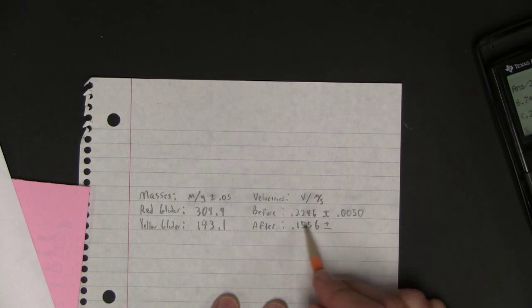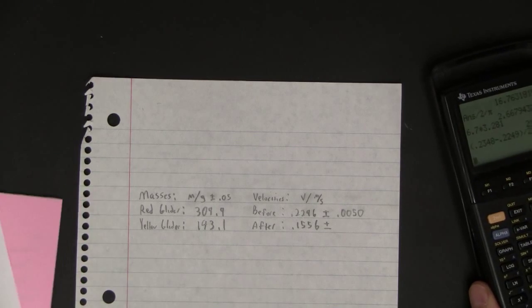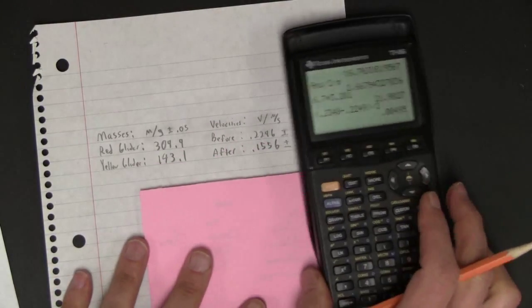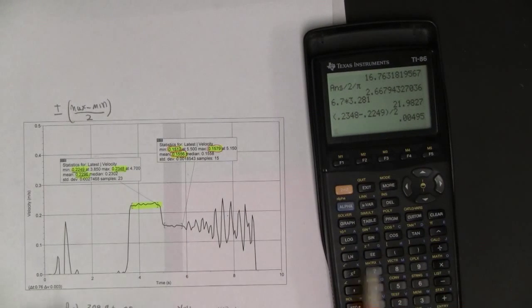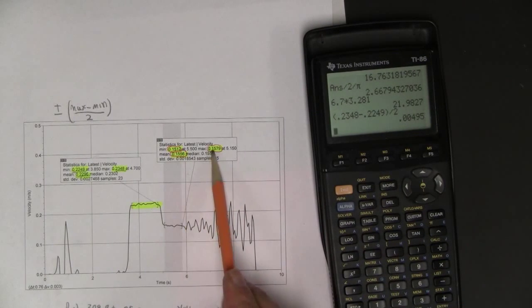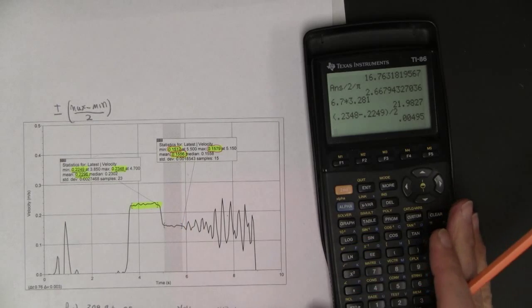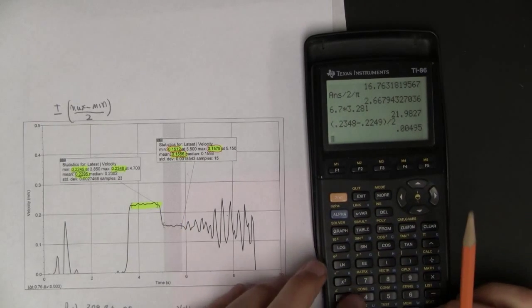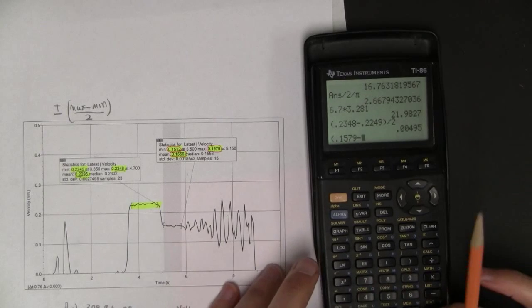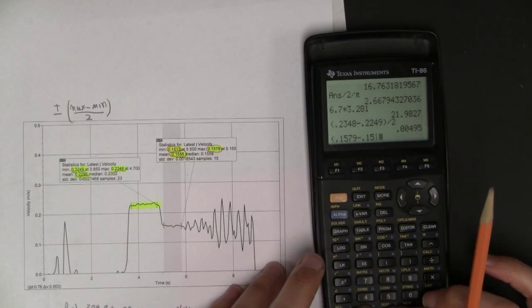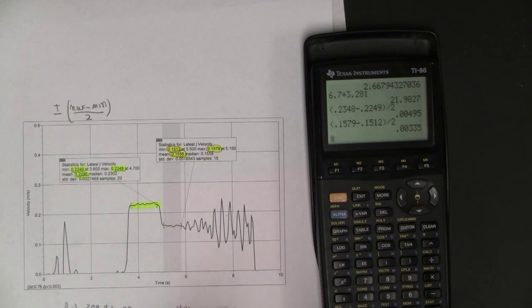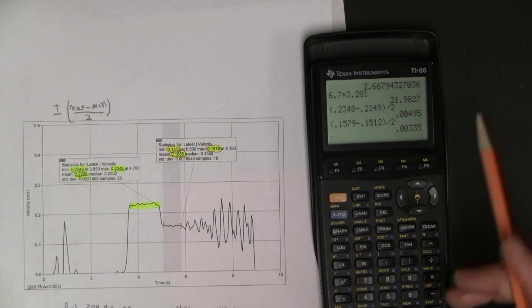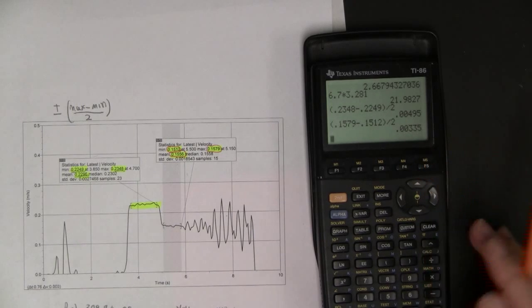And this is velocity meters per second. And then afterwards, let's figure out the velocity. Afterwards, it's 0.1579 minus 0.1512. So let's type that in, parenthesis, 0.1579 minus 0.1512 divided by 2, 0.00335. So I'm going to say 0.0034. I'm just going to round that. It's not a big deal if you don't round it. I just think uncertainties.